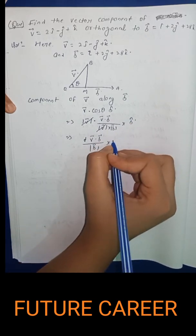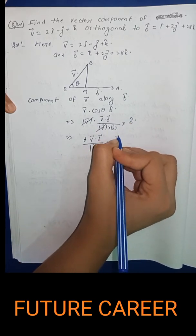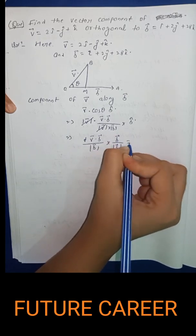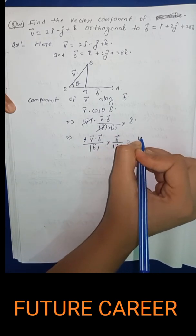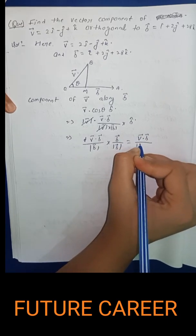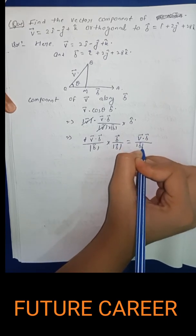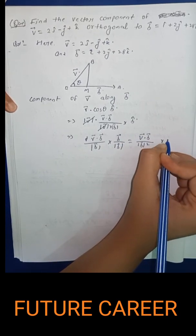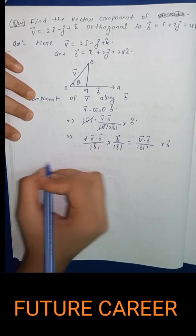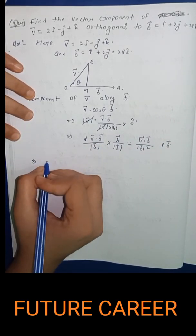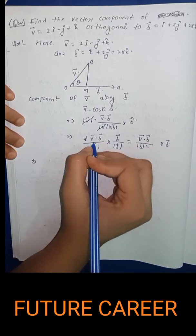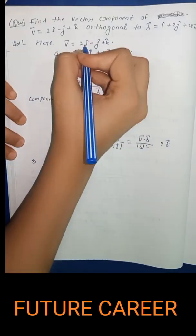We can write b cap as b vector upon magnitude of b vector. So the component of v along b equals v dot b upon magnitude of b squared, into b vector.